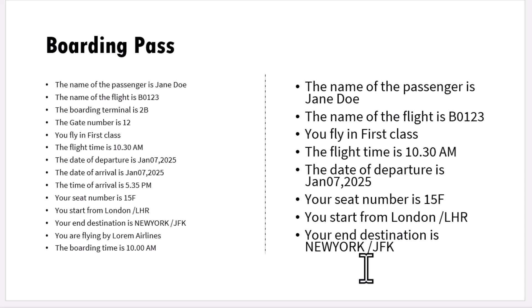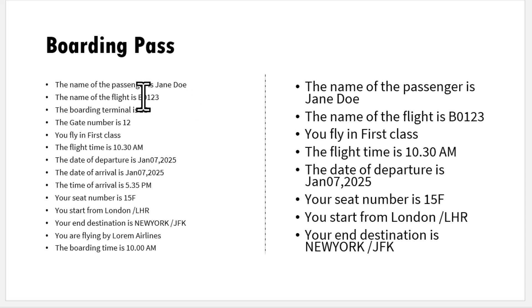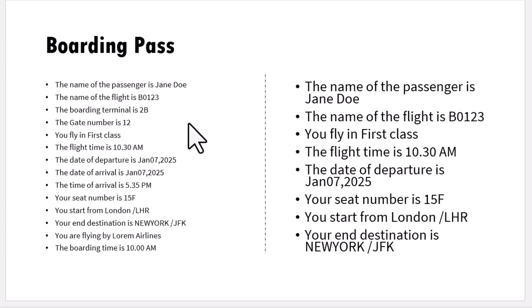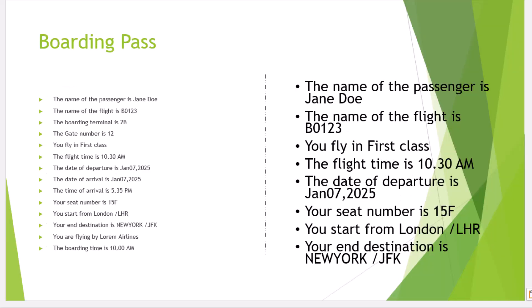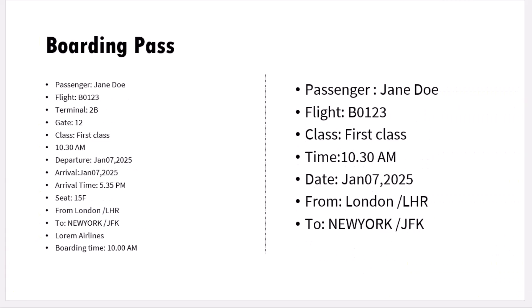This already looks a lot better than what we started out with. The next big clutter to be removed is the filler text. I don't need to say 'The name of the passenger is Jane Doe' — I just say 'Passenger: Jane Doe.' Flight B0123. Terminal 2B. Gate number 12. The moment I cut down all the unnecessary filler words, the slide looks way better. So just by decluttering the slide, we moved from here to here. What a relief.